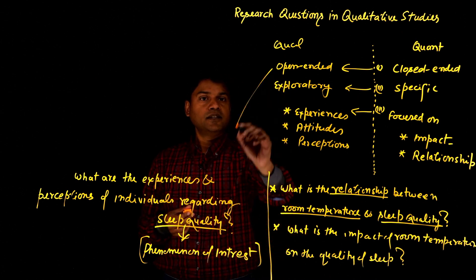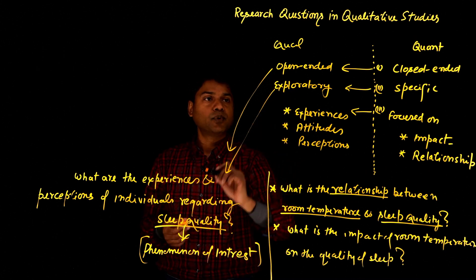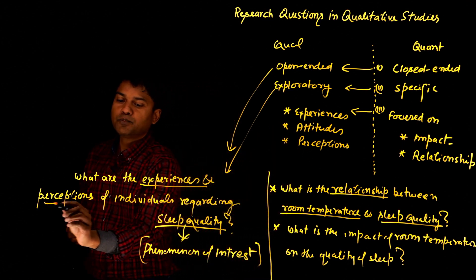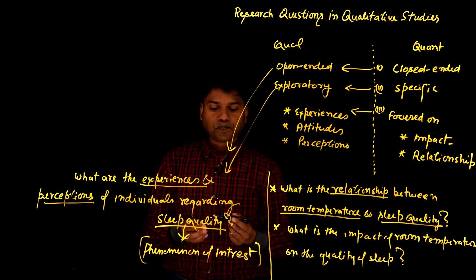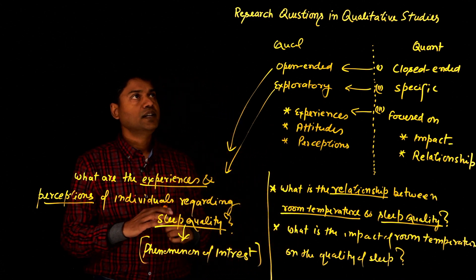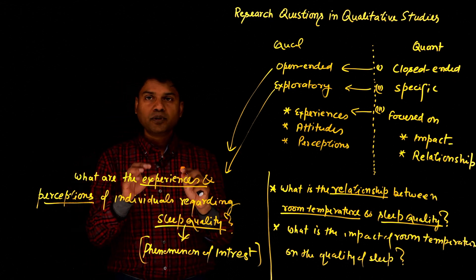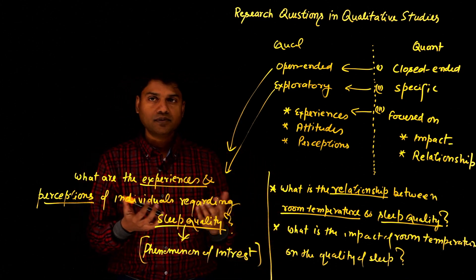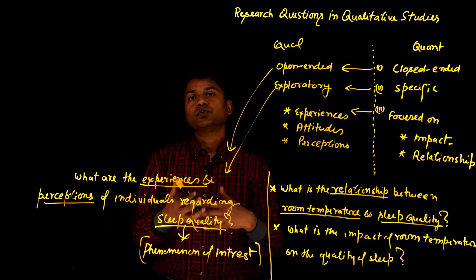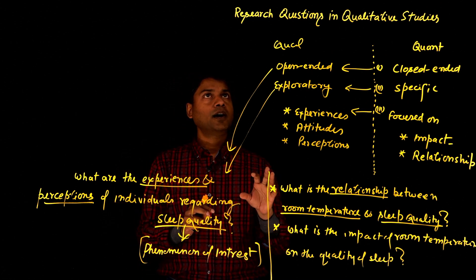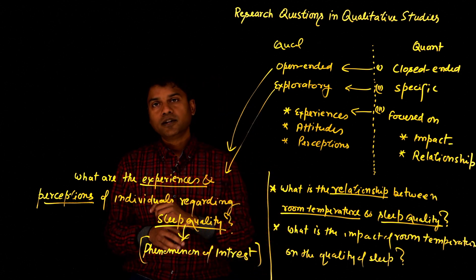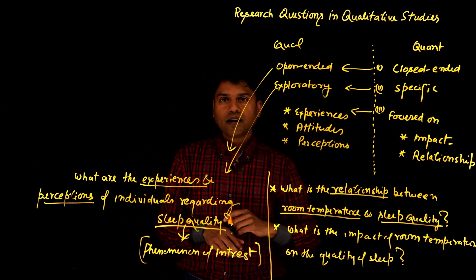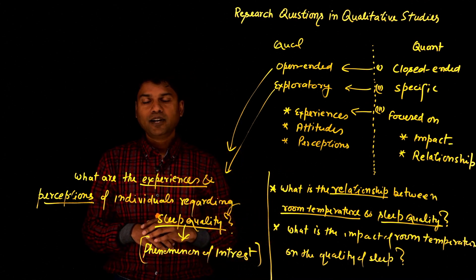So you see this research question is open-ended, exploratory, and focuses on the experiences and perceptions of individuals. When you write your research questions in qualitative traditions, it has to be open-ended and exploratory in nature, and it focuses on the experiences, attitudes, and perceptions of the people you want to study. That's briefly about how you write research questions in qualitative studies and how it differs from quantitative traditions. I hope that clarifies. Thank you. Have a good day.